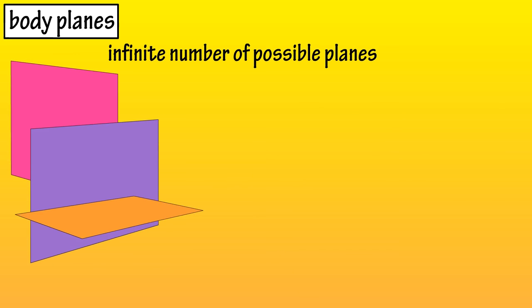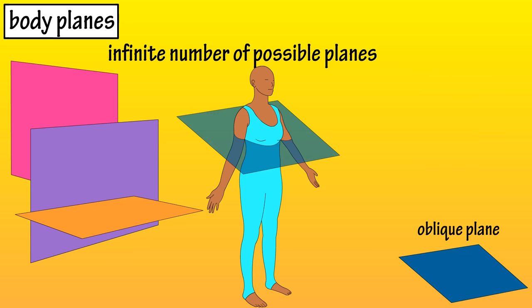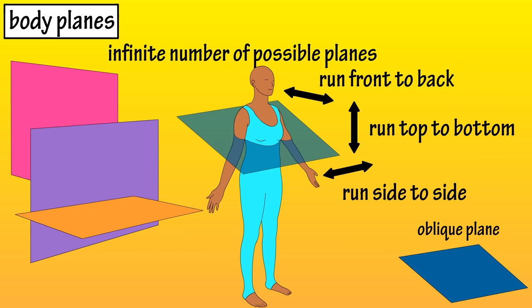Since we have an infinite number of possible planes, any plane that is not a sagittal, coronal, or transverse plane is described as an oblique plane. So we can draw a plane like this, which goes side to side but also runs slightly up and down and slightly front to back. This is an oblique plane. And that covers the basics on planes of the body.